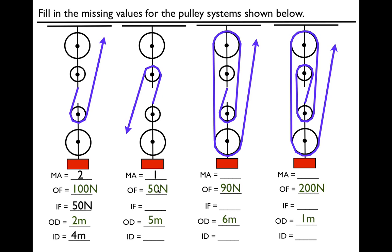The output force is 50 Newtons — that's the weight of the object. If we want to get the input force, we take the output force and divide it by the MA. There's only one string, so all the force of the object is on that one string, and the input force is 50 Newtons. Even though this is rolling over the top, if we pull down we have to pull at 50 Newtons. And the output distance — we multiply that times the MA to get the input distance — and it's five meters. There's only one string, so you get as much distance out of it as you put in.